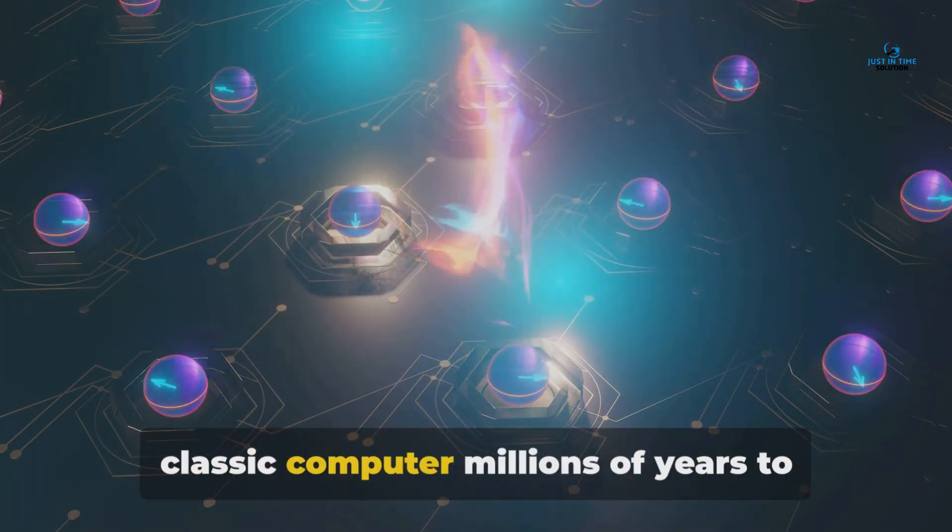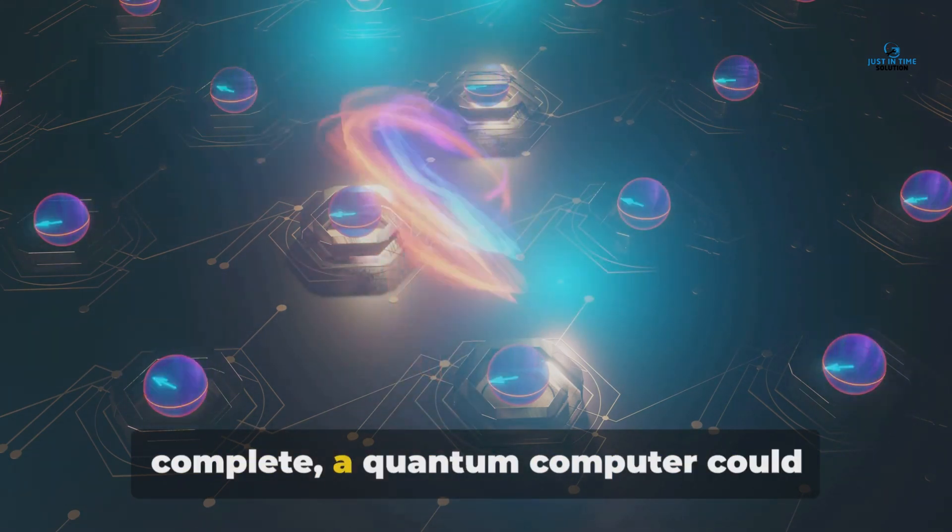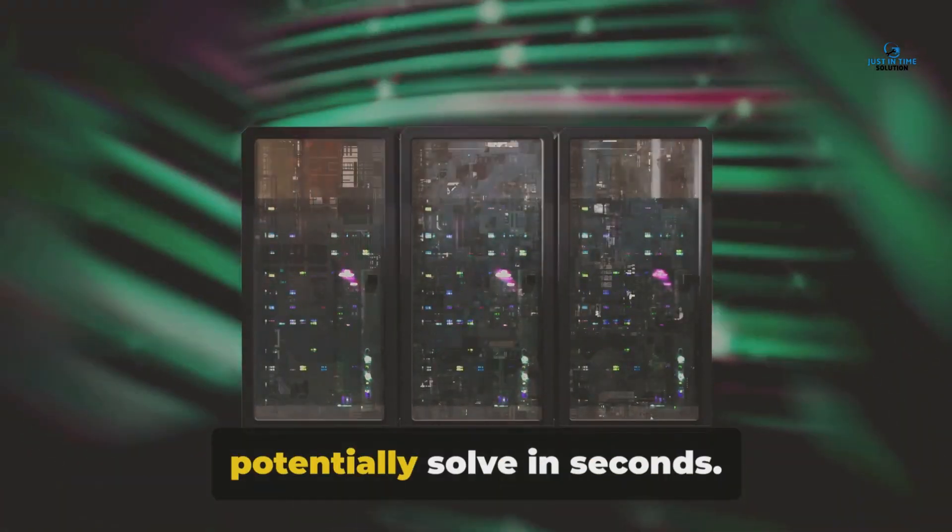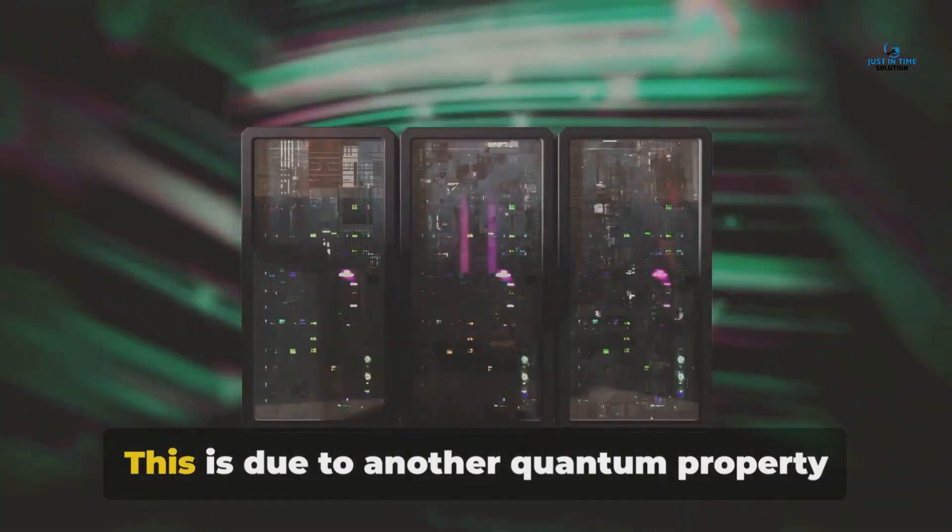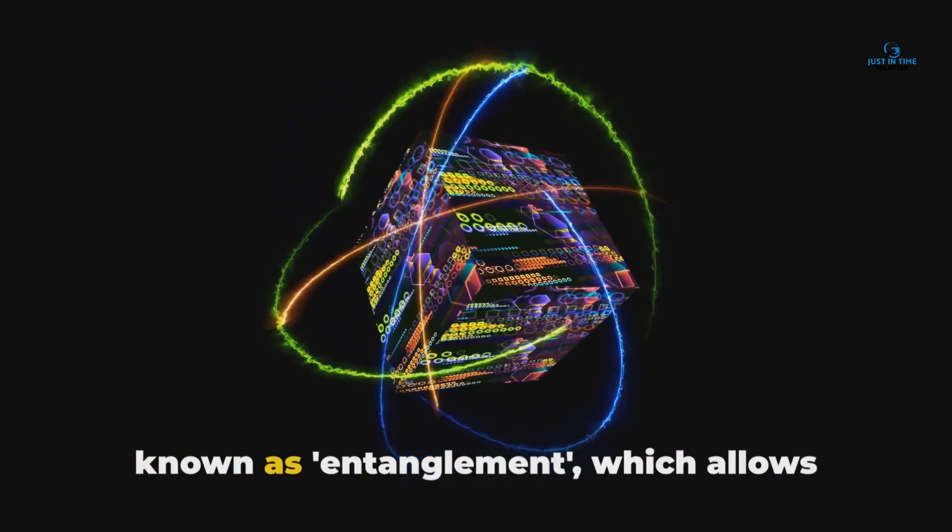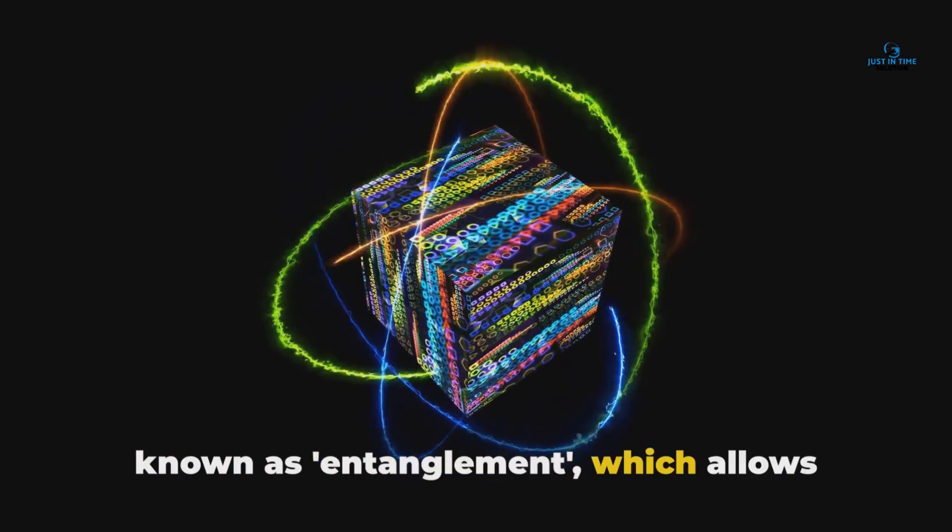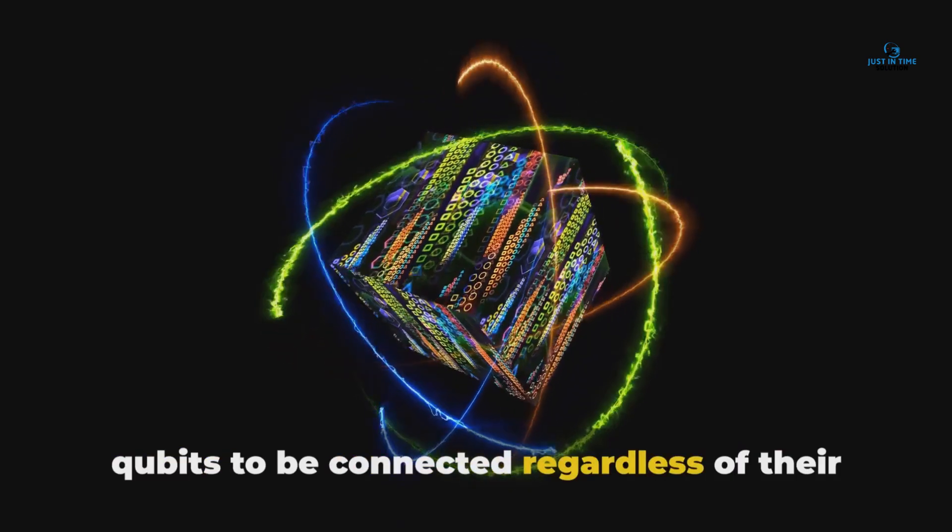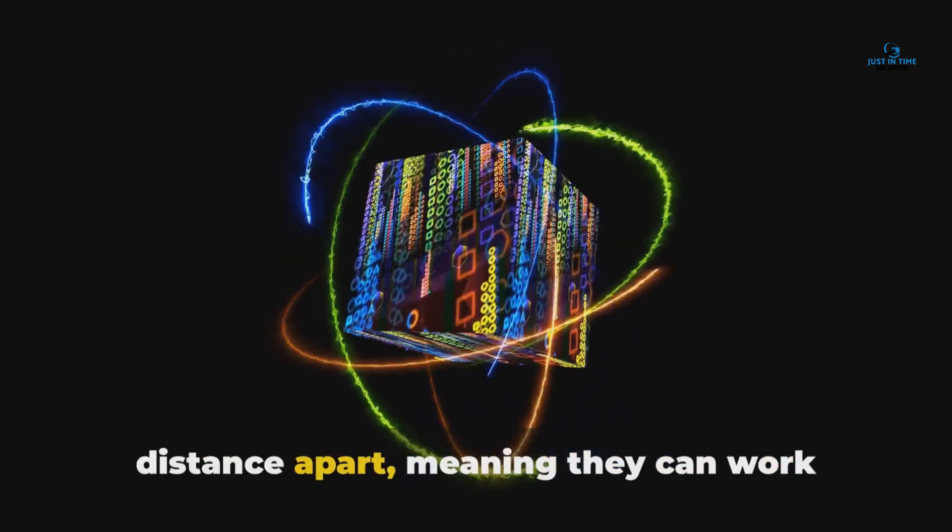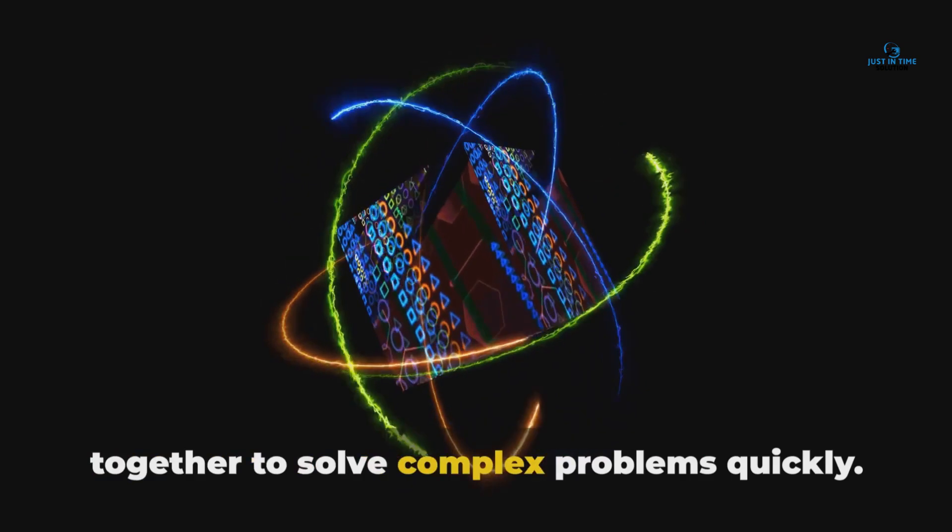For instance, tasks that would take a classic computer millions of years to complete, a quantum computer could potentially solve in seconds. This is due to another quantum property known as entanglement, which allows qubits to be connected regardless of their distance apart, meaning they can work together to solve complex problems quickly.